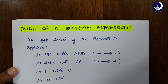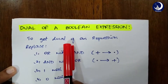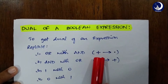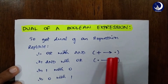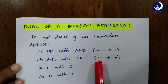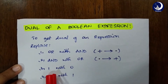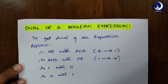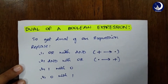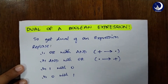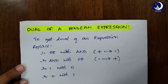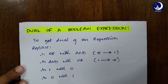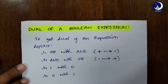Now let's look onto the dual of a Boolean expression. In order to get the dual of an expression, we simply replace OR with AND — that is, plus is transformed into dot — and AND with OR — that is, dot is replaced with plus — and 1 with 0, and 0 with 1. One important thing to remember: we are not at all changing or replacing the complements.